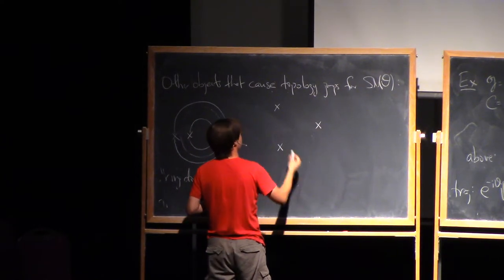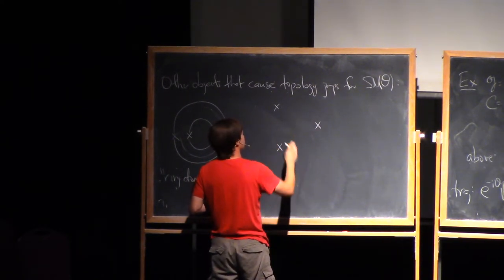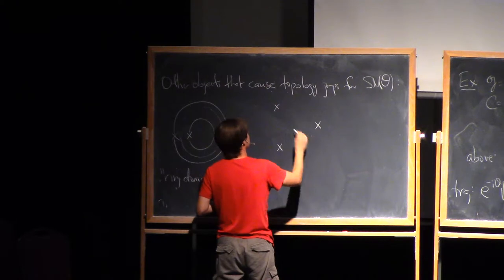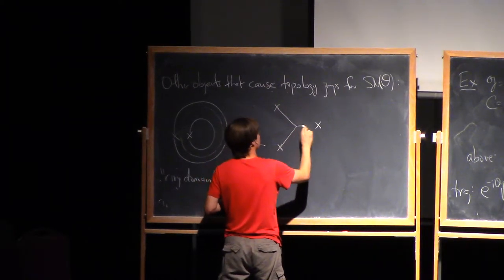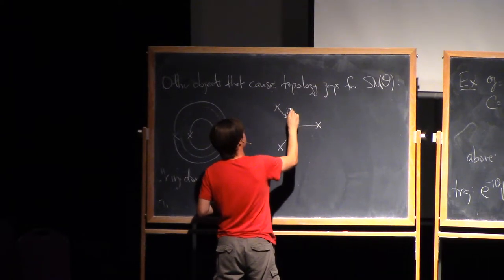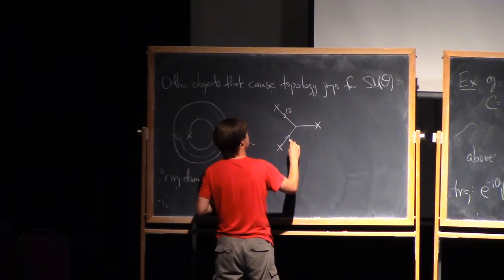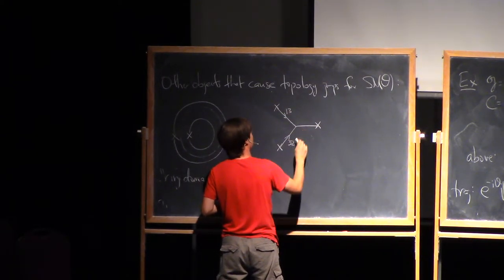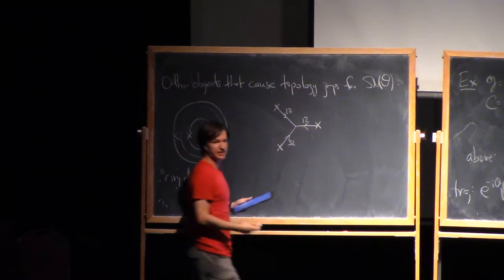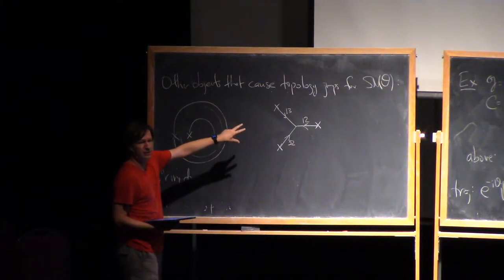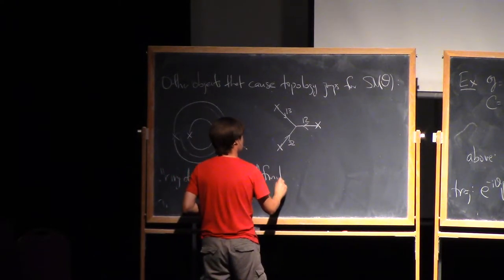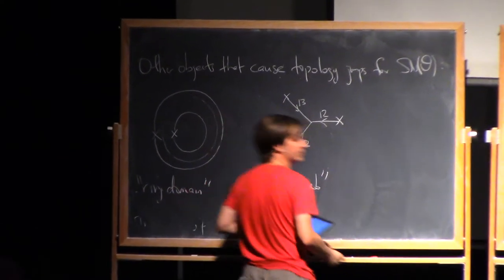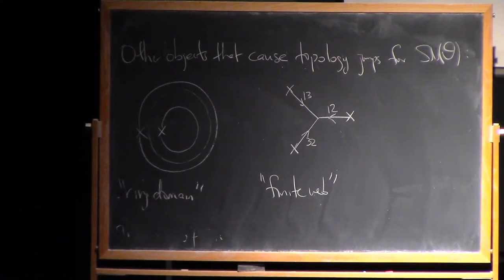And another thing that can happen in the higher-ranked situation, but not in the SL2 situation, is you can have something like this. You can have three leaves of different foliations that come together. A 1-3, 3-2, and 1-2 like this. When this kind of object appears, it also causes a topology change. I'll call this a finite web. And maybe I'll show you a picture of that one, how that one happens.